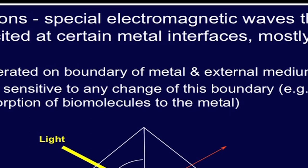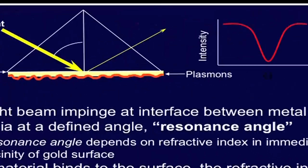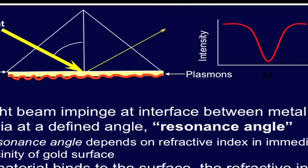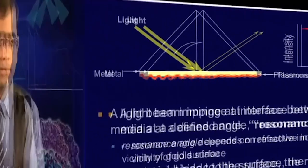From the gold surfaces, these plasmons are generated at the boundary of metal and external medium, which is usually air. They are very sensitive to any changes on this boundary, like adsorption of biomolecules to the metal. In SPR, a light beam impinges at the interface between metal and media at a defined angle called the resonance angle. The resonance angle depends upon the refractive index in the immediate vicinity of the gold surface. When a molecule binds to the gold surface, the refractive index increases and the SPR curve shifts toward higher angles. These changes in the angle of reflection of light, caused by the binding of probe to the immobilized proteins, are measured for the characterization of biomolecular interactions in real time.